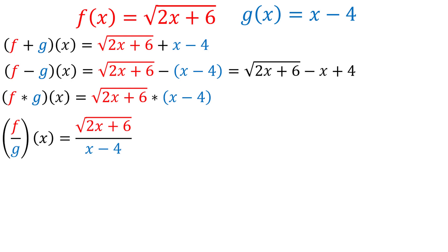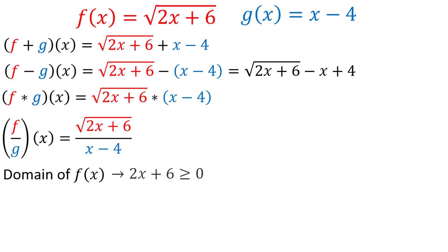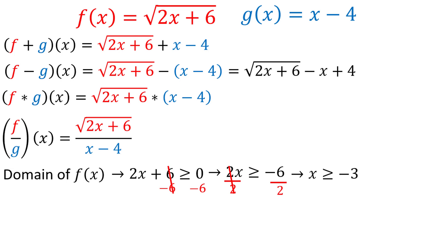Next, let's find the domain of each combination function, starting with the domains of f(x) and g(x). For f(x), the inside of the square root must be non-negative, so we need 2x + 6 ≥ 0. Solving: subtracting 6 gives 2x ≥ −6, and dividing by 2 gives x ≥ −3. This can be expressed in interval notation as [−3, ∞). We use a bracket to include −3, and always use parentheses for infinity.